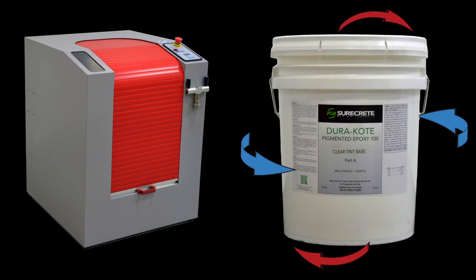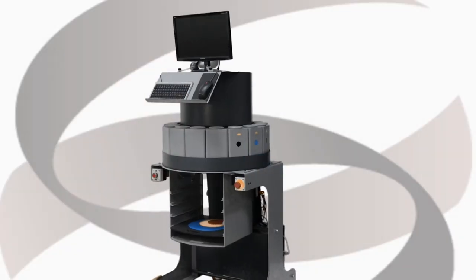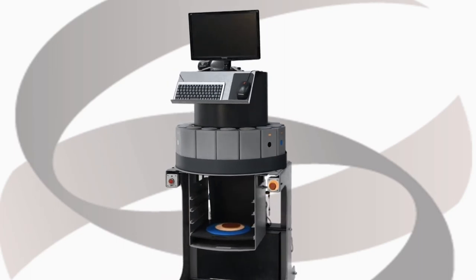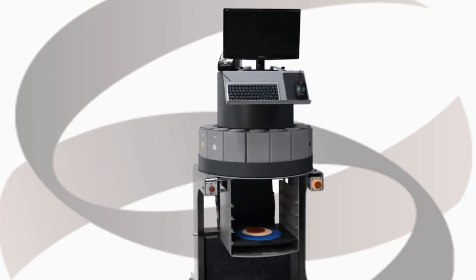The orbital process creates a vortex that mixes the pigment more efficiently and effectively into paints and concrete coatings than other style shakers. SureCrete's tint machine comes with everything needed for tinting concrete sealers and coatings.